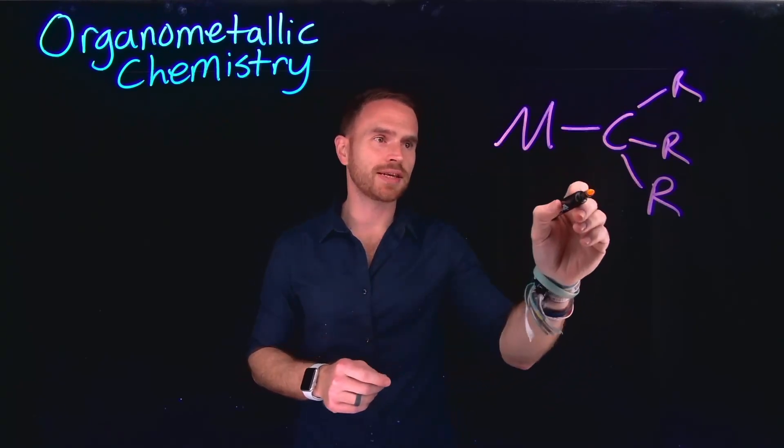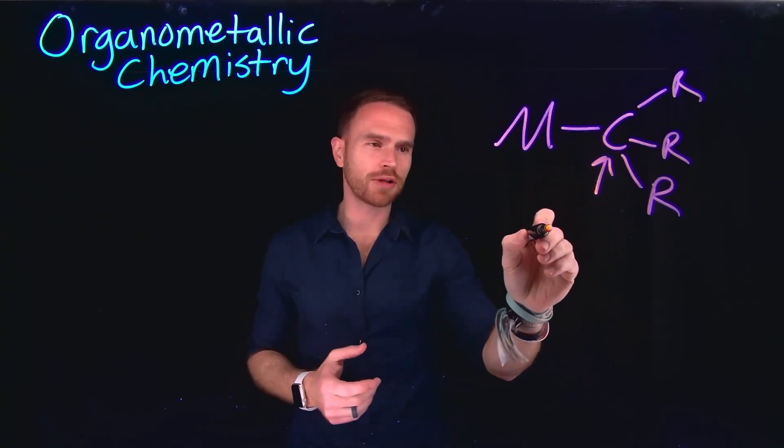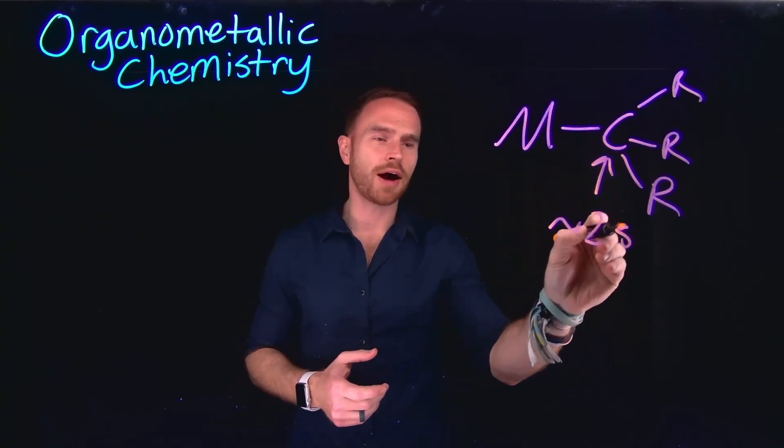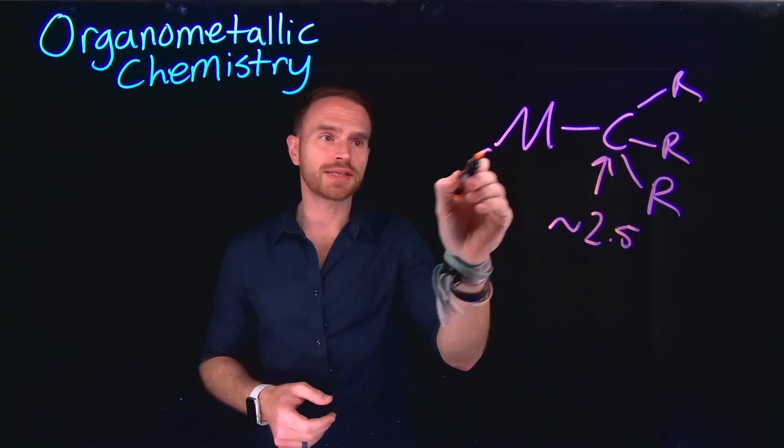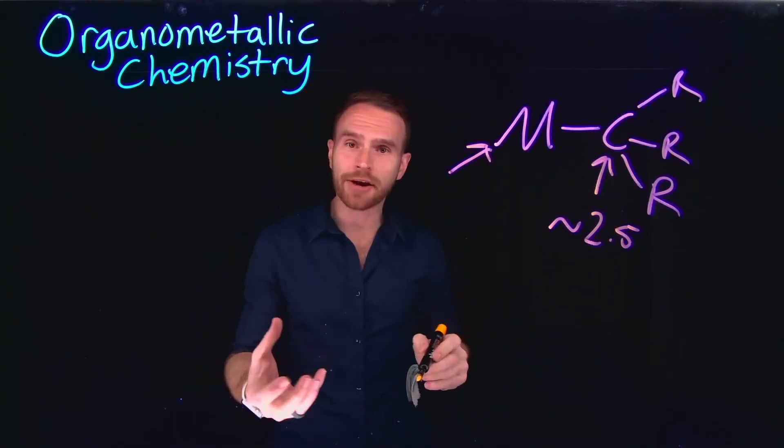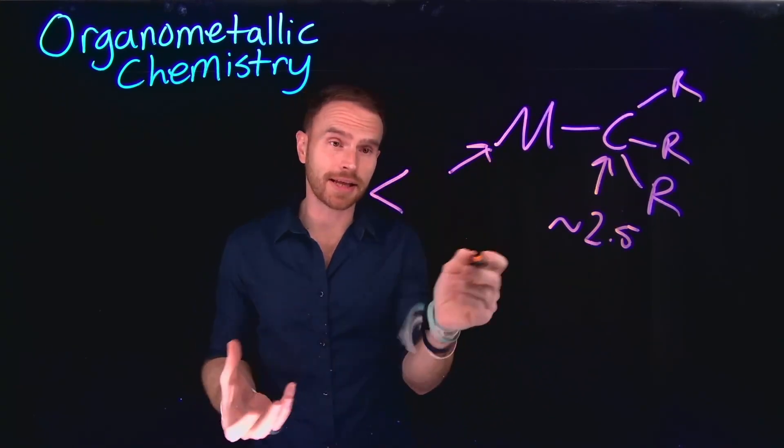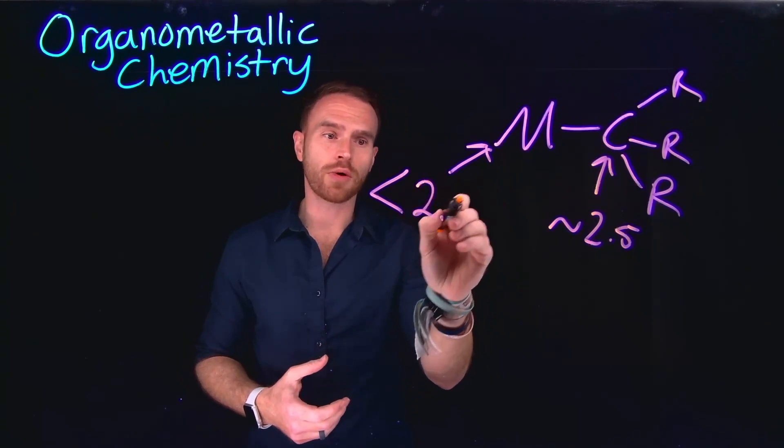Remember that the electronegativity for a carbon atom, according to the Pauling scale, is around 2.5. And a metal is typically an atom or an element that contains an electronegativity that is lower than 2.